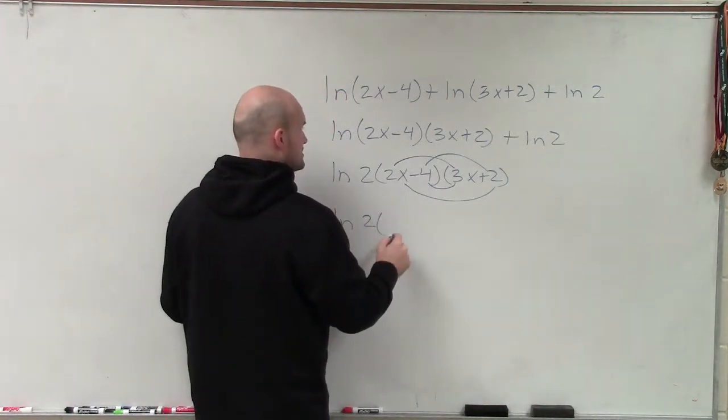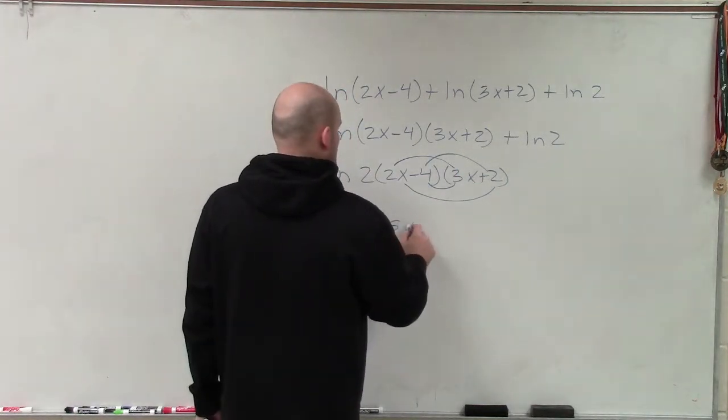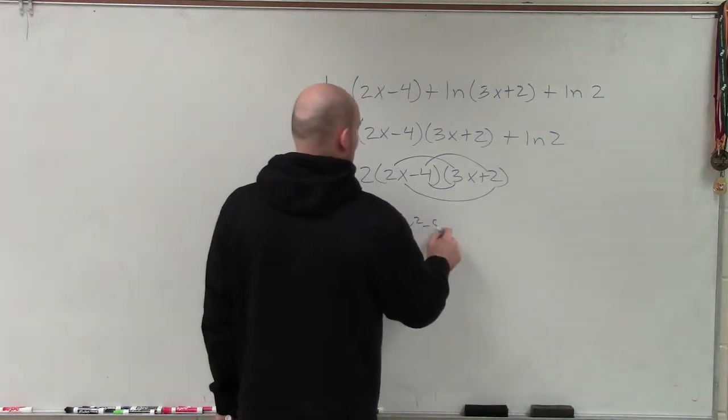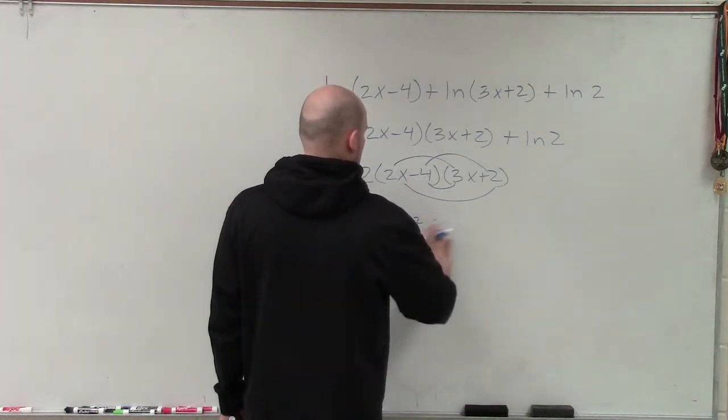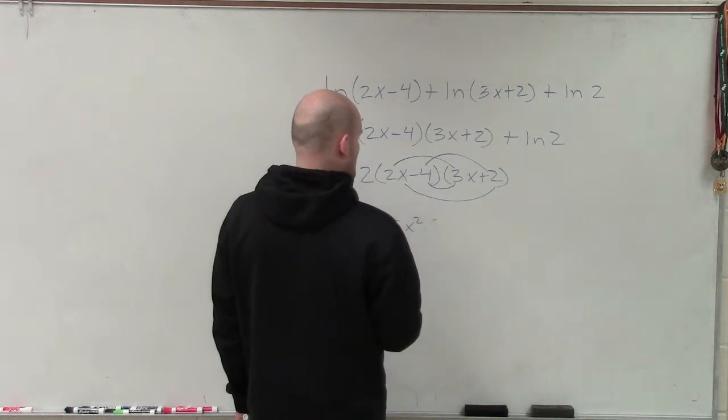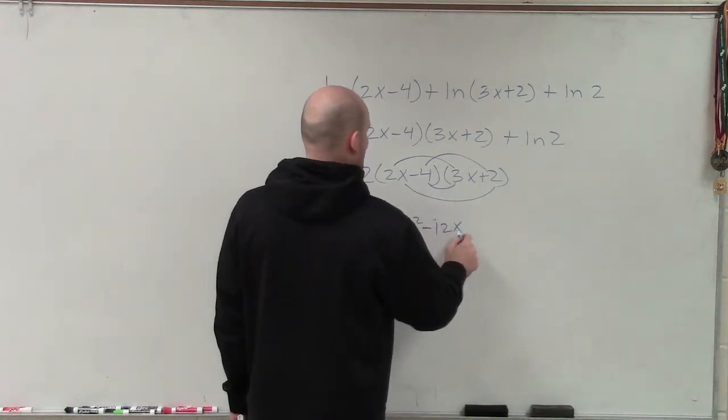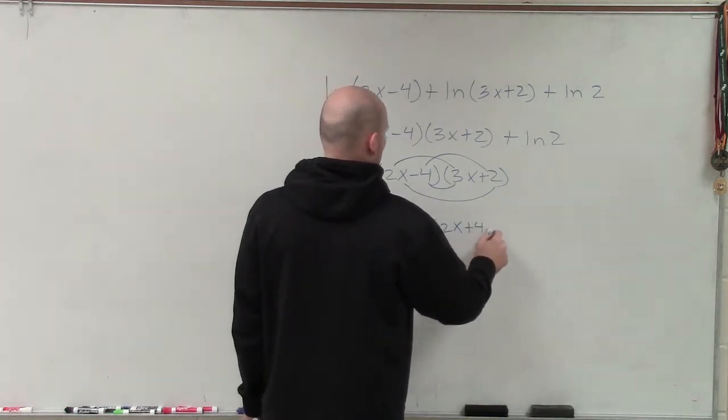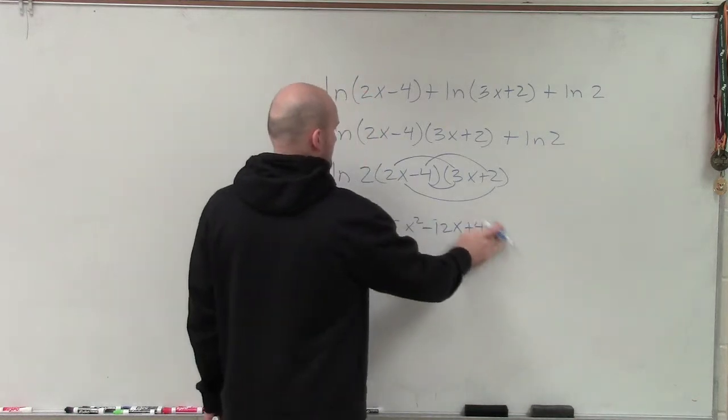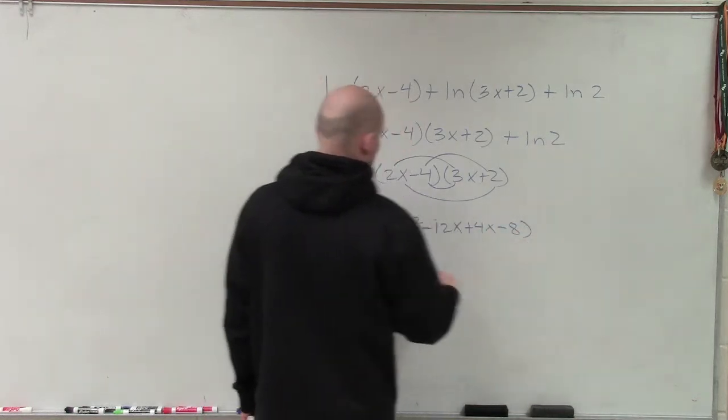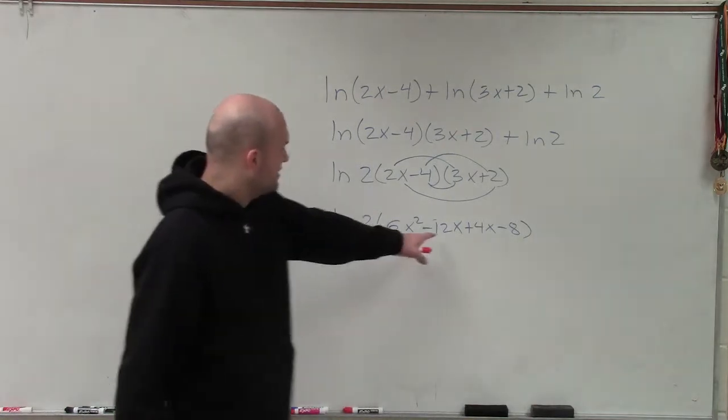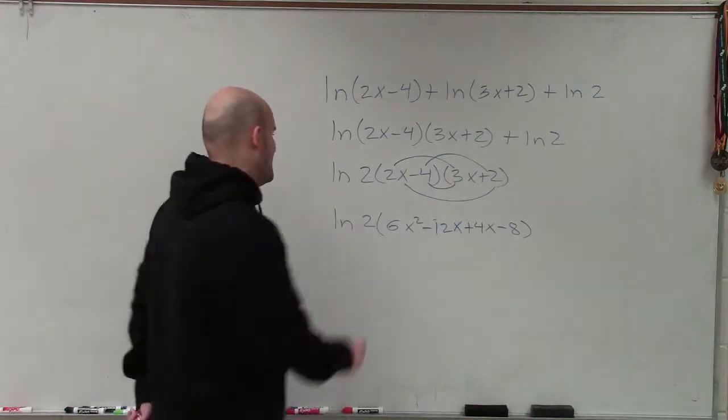So therefore, I'll have ln of 2 times 6x squared minus 8x minus 8. And then obviously, you can simplify that to become negative 8x.